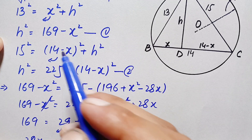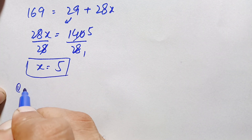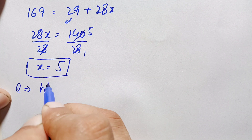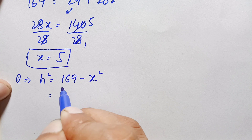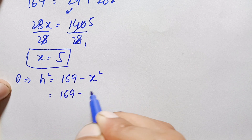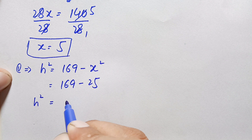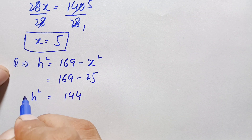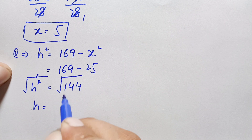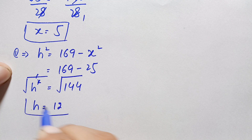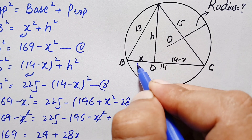Now we substitute x = 5 into equation number one to find h. Equation one gives h² = 169 − x², so substituting x = 5: h² = 169 − 25 = 144. Taking the square root of both sides, h = √144 = 12. So the value of h is 12 units and x is 5 units.